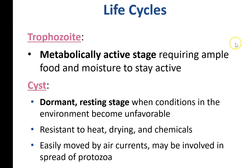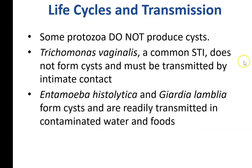It's kind of like the endospore thing, except the endospore creates a new cell while the cyst just does a transformation. Some protozoa don't produce cysts, but most have that two-stage life cycle. Trichomonas vaginalis doesn't form cysts — it's a very common protozoal pathogen that is sexually transmitted. Entamoeba histolytica and Giardia lamblia both form cysts that get into food and water sources, contaminating them, and people end up getting diarrhea.